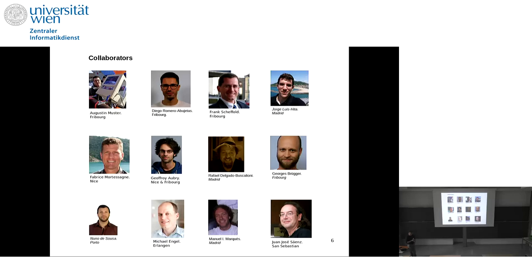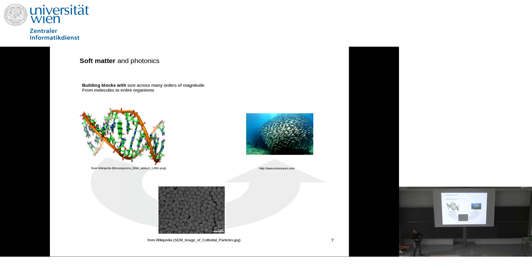What is soft matter? I see roughly three main ingredients in soft matter systems. One is the building blocks — 'more is different,' as the well-known quote goes, and this is particularly true here. In soft matter, building blocks range all the way from molecules up to full living organisms, passing through building blocks of a size around a micron, which is the typical size in a soft matter system.